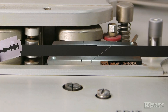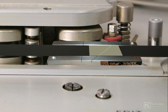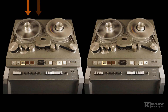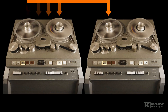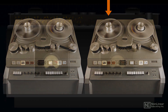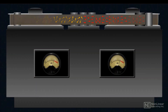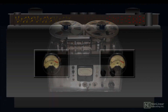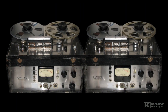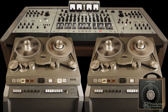with a razor blade and splicing block. We'll also go over additional techniques like sound-on-sound recording, utilizing tape saturation for warmth and presence, and some of the still-popular classic tape-based effects like echo, flanging, and ADT—doubling—including the distinctive ADT effect made famous at Abbey Road.